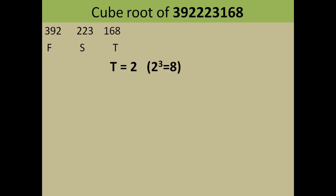For the first digit, we check where 392 lies between two consecutive cubes. 392 lies between seven cubed (343) and eight cubed (512). So the first digit is automatically 7. We have now found the first digit (7) and the last digit (2).